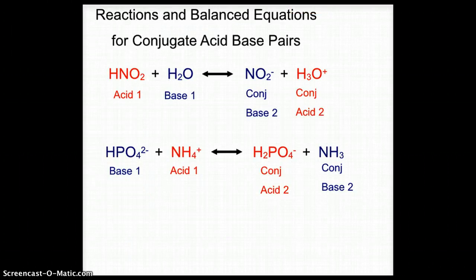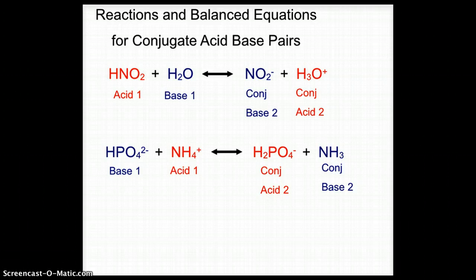How would these conjugate acid-base reactions look in a balanced equation? Let's begin with nitrous acid HNO₂ as acid one, added to water as base one. When the nitrous acid gives up its hydrogen, it creates the conjugate base NO₂⁻ (nitrite). The water takes on that hydrogen and gives us H₃O⁺, the hydronium ion, which becomes the conjugate acid for that base.